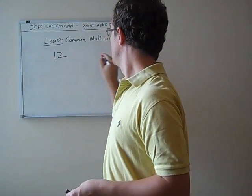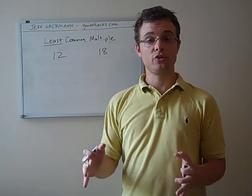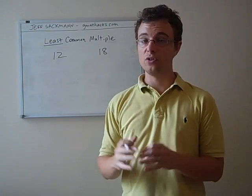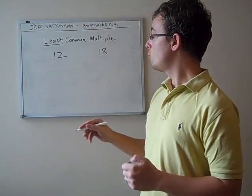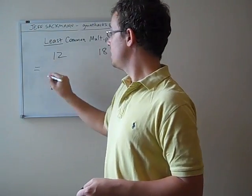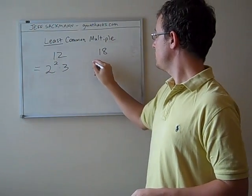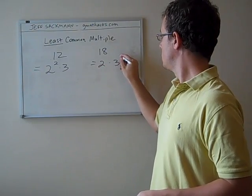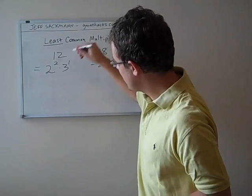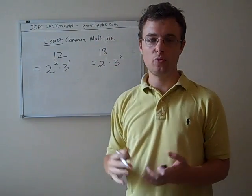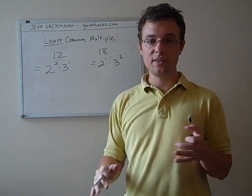So what we're going to do is take both numbers and come up with their prime factorizations. In a previous video, I walked you through how to do a prime factorization. If you're not familiar with that technique, I strongly recommend you learn how. You can go back and check out that video. But for the time being, we can say that 12 is equal to 2 squared times 3, and 18 is equal to 2 times 3 squared. So for simplicity's sake, I'm going to add a little exponent of 1. So 3 is the same as 3 to the first power. It's just handy, as we'll see in a moment, to have the exponents there, even if they're a little redundant.